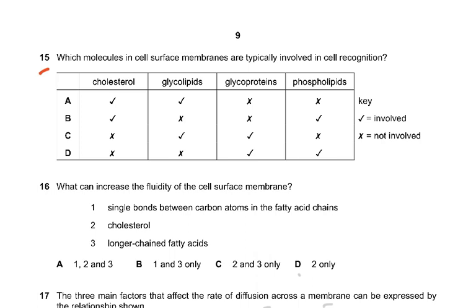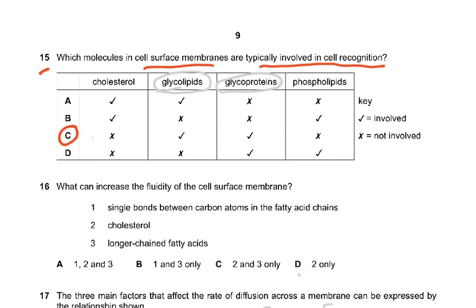Question 15: Which molecules in cell surface membranes are typically involved in cell recognition? The answer is C: glycolipids and glycoproteins. Glycoproteins result in antigen formation, and that is how cell recognition takes place.